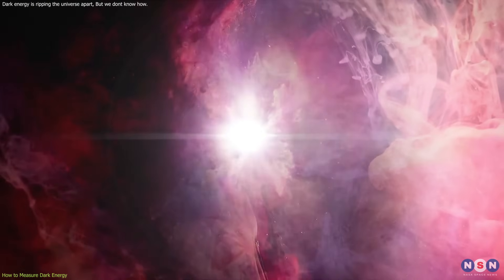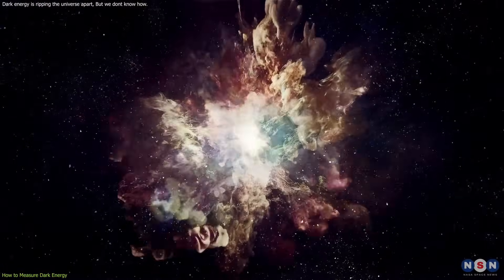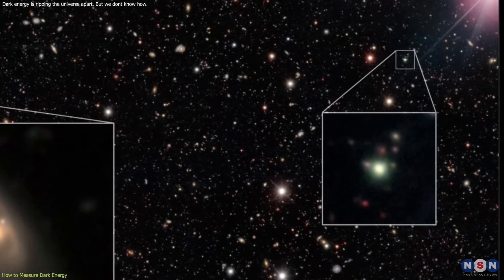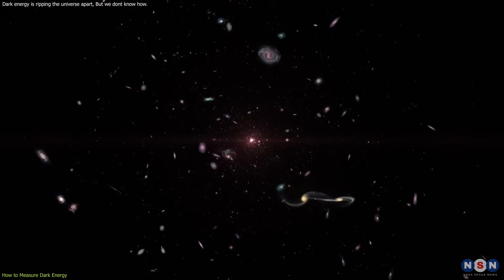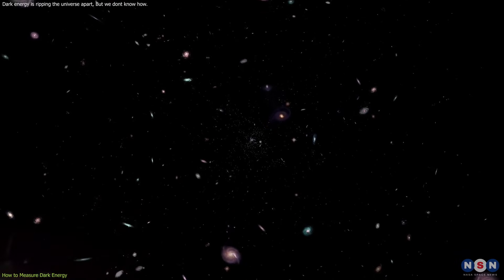Supernovae are the explosive deaths of massive stars that can be seen across the universe. By measuring the brightness and redshift of supernovae, we can determine how far away they are and how fast they are moving away from us. This allows us to measure the expansion history of the universe and how it has changed over time.